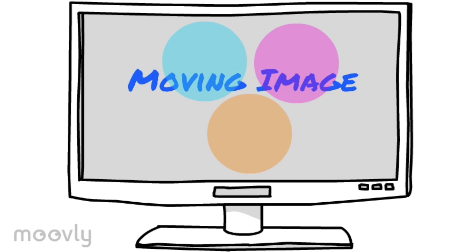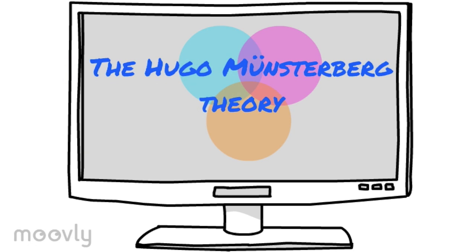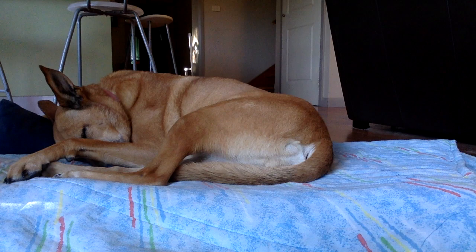Moving pictures can be used to portray many things. For instance, it can imitate reality through a simultaneity by showing two things happening at once. Through the use of different camera techniques, moving pictures can be used to show an individual's mental thought process.